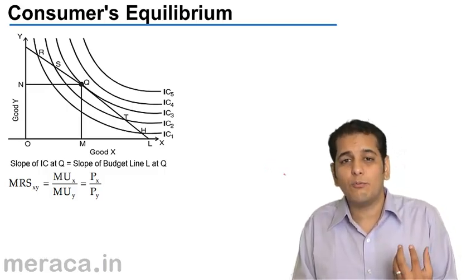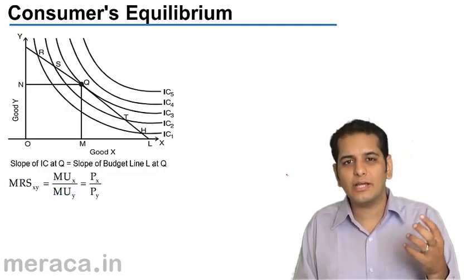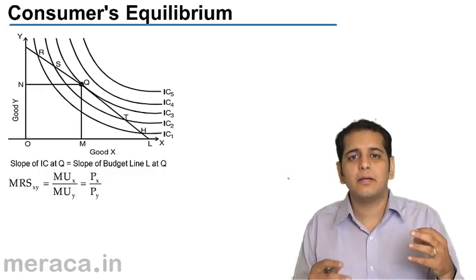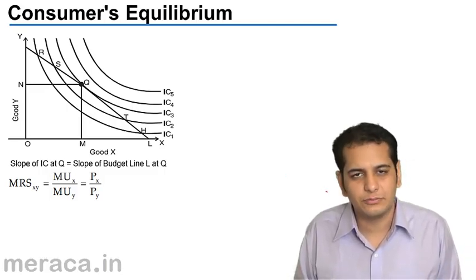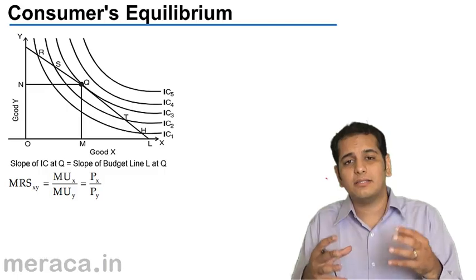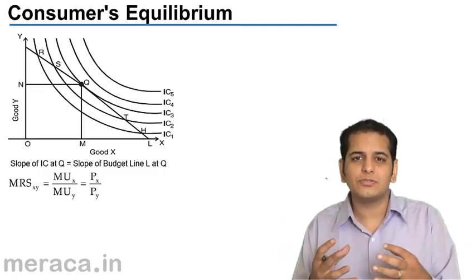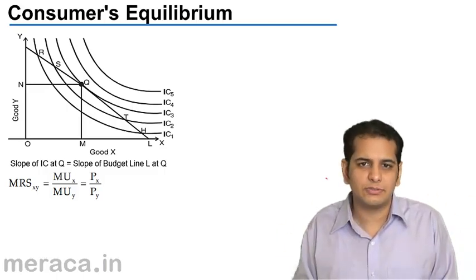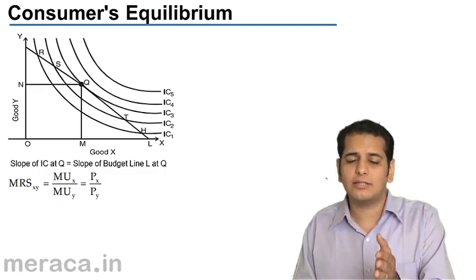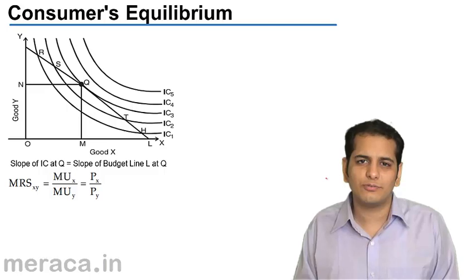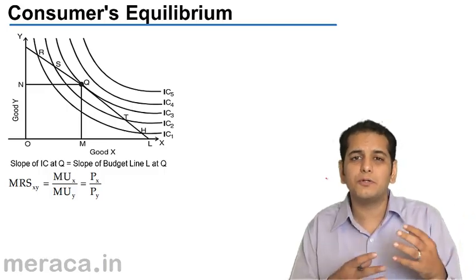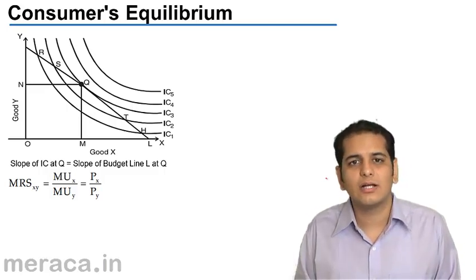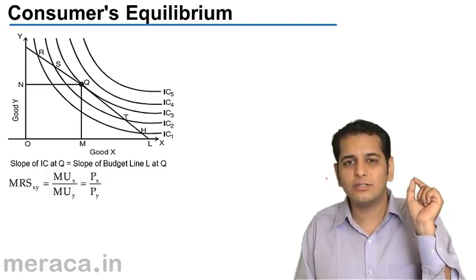Let's first understand what is consumer's equilibrium. Consumer's equilibrium is that combination of goods where the consumer is deriving the maximum level of satisfaction. The consumer is at that point where the combination of goods is such that he is deriving the highest level of satisfaction. And since the consumer is at that point, he will not be able to change his consumption pattern — he will not be able to rearrange his consumption level because it is only a single point.